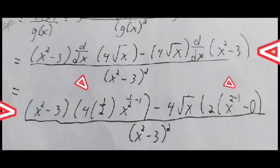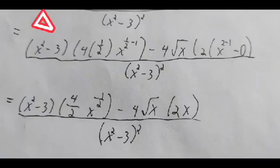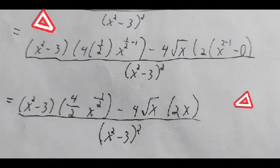Then substitute. After the substitution, simplify: x squared minus 3 times 4 over 2 x to the power of negative one-half, minus 4 times square root of x times 2x.